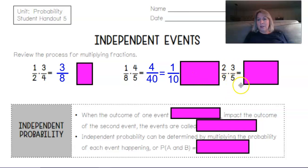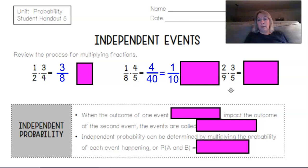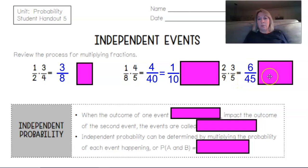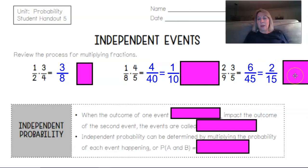In our last example, 2/9 times 3/5. So say the probability of something was 2 out of 9, and the probability of another event was 3 out of 5. We can multiply those together: 2 times 3 is 6, and 9 times 5 is 45. So it becomes 6 over 45. If we simplify that by dividing the 6 and the 45 by 3, that results in 2/15.